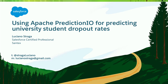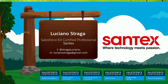Welcome to my session about Prediction.io for estimating dropout rates at universities. I'm Luciano Estraga, a 26-times Salesforce certified professional from Buenos Aires, Argentina. I work for Santex, where we are passionate about what we do. I also collaborated with the University of Palermo in Argentina, teaching Python for a specific subject, and that was actually the motivation of this research I did.